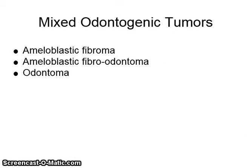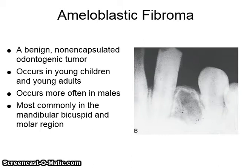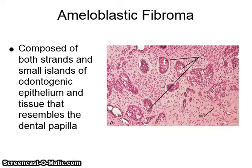Mixed odontogenic tumors include ameloblastic fibroma, ameloblastic fibroodontoma, and odontoma. Ameloblastic fibroma is a benign, non-encapsulated odontogenic tumor. It occurs in young children and young adults, and more often in males. It most commonly is seen in the mandibular bicuspid and molar region. It is composed of both strands and small islands of odontogenic epithelium and tissue that resemble the dental papilla.